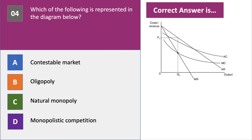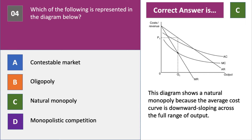Two more questions left. Question four: which of the following market structures is represented in the diagram below? The diagram shows falling average cost across the full range of output, with the marginal cost line below average cost. The market structure associated with that diagram is a natural monopoly, because due to significant economies of scale, the average cost is downward sloping across the full range of output.